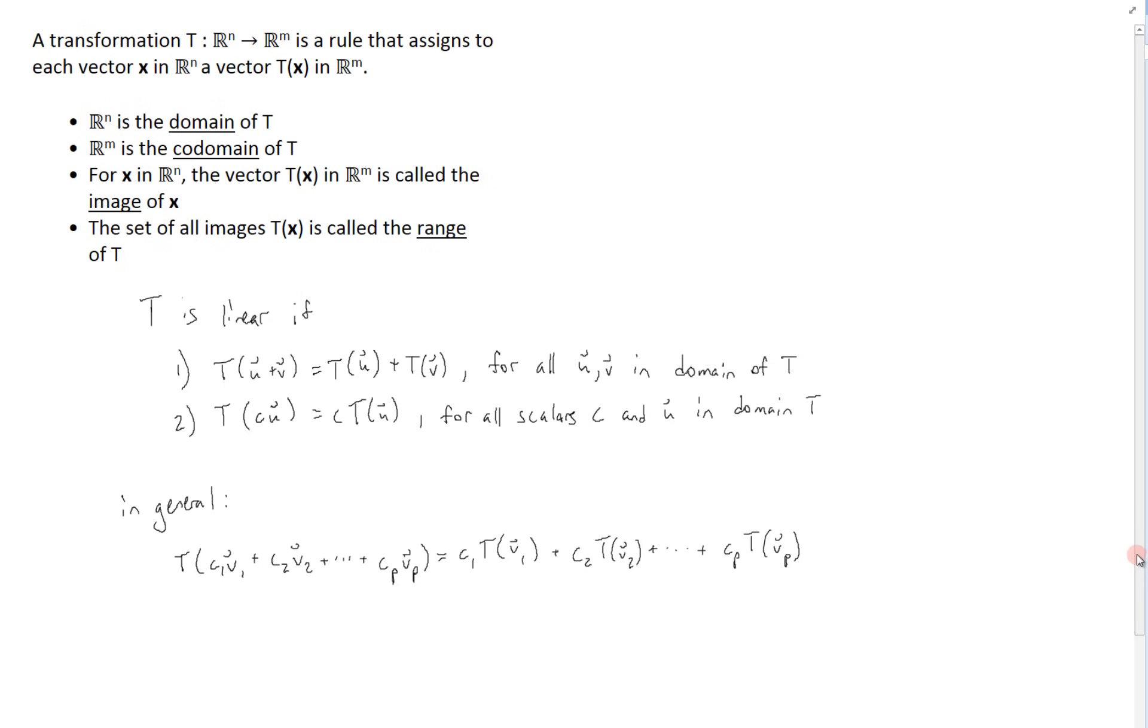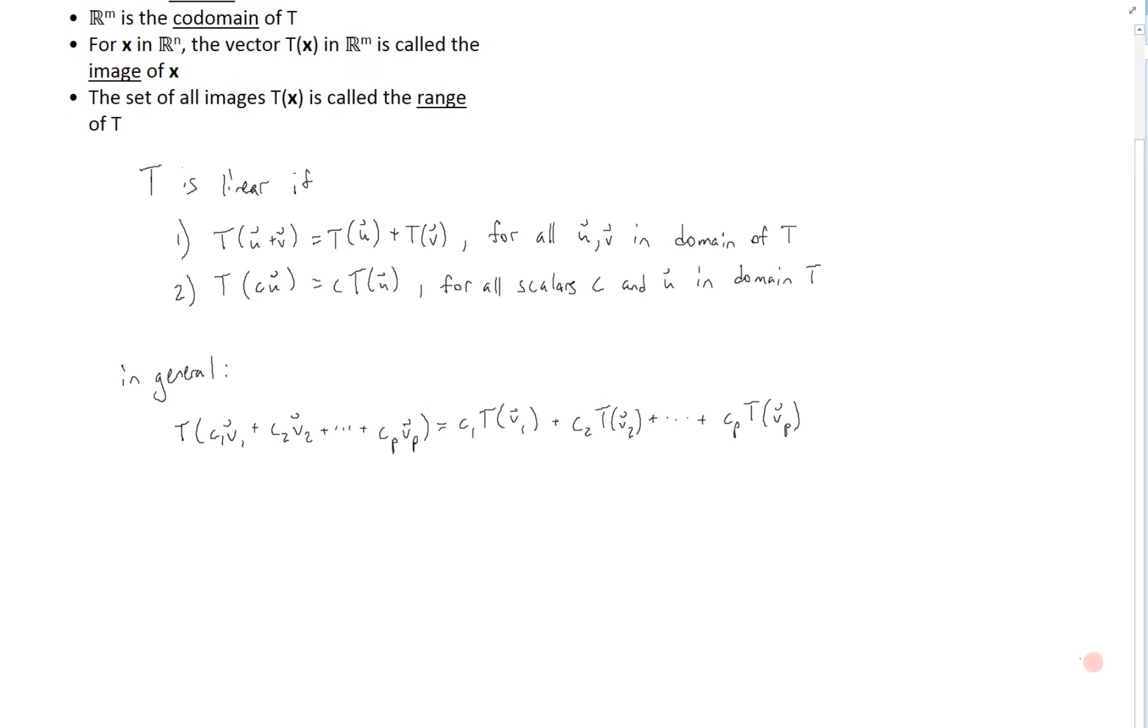So having this background, let's now look a little bit further. We can say that if T is linear, we can find a matrix A such that T(x), the transformation of x, can be written as a matrix times x. So how do we find such a matrix A for a given transformation T, for a linear transformation T?